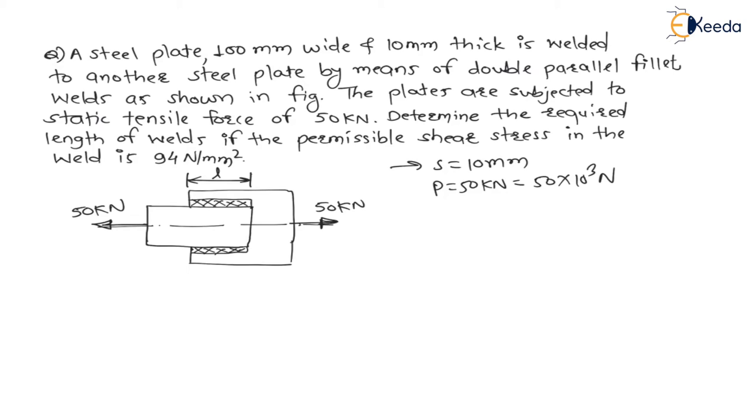Now here our target is to find the required length of weld, that is L is equal to question mark. The permissible shear stress means maximum shear stress which is nothing but SSY divided by factor of safety, and this is given as 94 N per mm square. Length we have to calculate and it is a double parallel fillet weld.